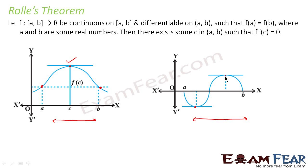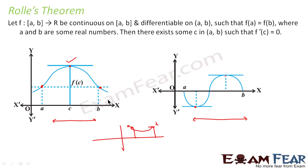Looking at the graph, there has to be a point where the function is at a maximum or minimum between a and b. It can be a case with both maximum and minimum, or just a maximum, or just a minimum. This is what Rolle's Theorem says: if the function is continuous with domain a to b, differentiable on that domain, and f(a) equals f(b), then there exists a c in the domain such that f'(c) equals zero.